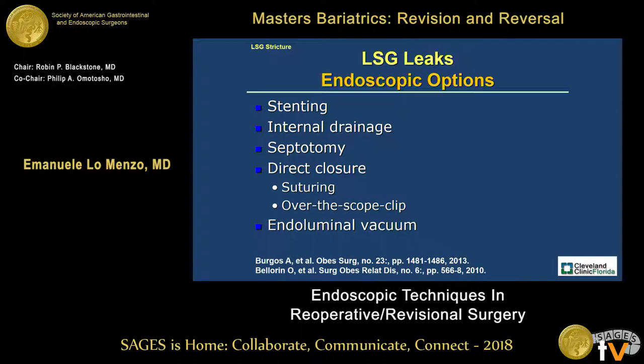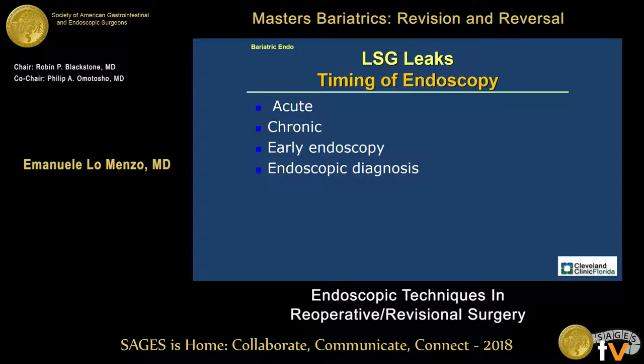The question is: what can we do endoscopically? Most of the indications for endoscopic procedures after sleeve leaks are related to stenting, internal drainage, septotomy, direct closure, and potentially endoluminal vacuum. We're going to briefly touch on each one of those aspects.